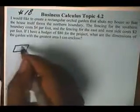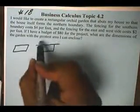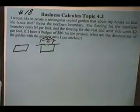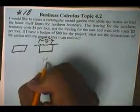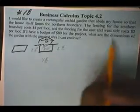Well we have a garden. Typically a garden would just be a rectangle, but since my house will form the northern boundary, it will look like this instead, where my house is over here. This is my garden. And we know that the fencing on the southern boundary, all this fencing right here, this is $4 a foot. Whereas the east and west sides are costing me $2 every foot. And I have a total budget of $80 for this. And I'm trying to find the dimensions that will give me the greatest area, so I need the area formula.